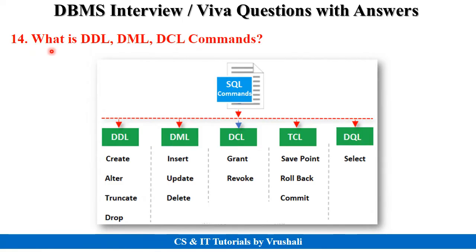The next question is: what exactly are DDL, DML, and DCL commands? In SQL there are five types of commands. DDL is data definition language, which applies to the structure of the table — like CREATE, ALTER, TRUNCATE, and DROP. DML is data manipulation language, which applies to operations on data — like INSERT, UPDATE, and DELETE. DCL is data control language, which controls the database using GRANT and REVOKE commands. TCL is transaction control language, whose commands apply to transactions using ACID properties — like SAVEPOINT, ROLLBACK, and COMMIT. DQL is data query language, which includes the SELECT command to perform query operations on the database.